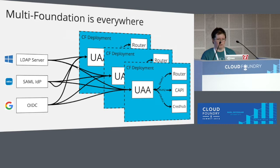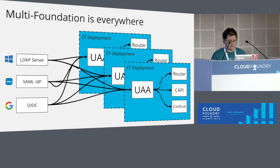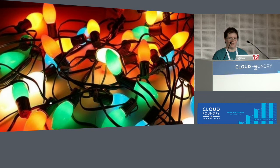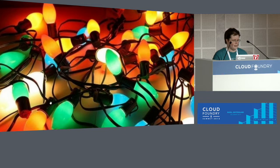Most customers of any size are running multiple foundations — they have many deployments of Cloud Foundry. This is where the story gets kind of gross, where the integration between your external identity providers and the UAA gets pretty complicated as you add more and more things to this picture. I've only shown three here, but it's not uncommon to hear of customers running 10, 20, 50, 100 Cloud Foundry deployments. Managing all this configuration is quite painful — like at Christmas time when you pull out the lights wanting to create a magical atmosphere, but first you have to untangle this gnarly mess of tangled-up lights.